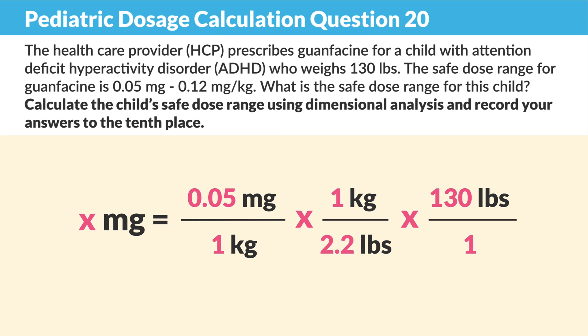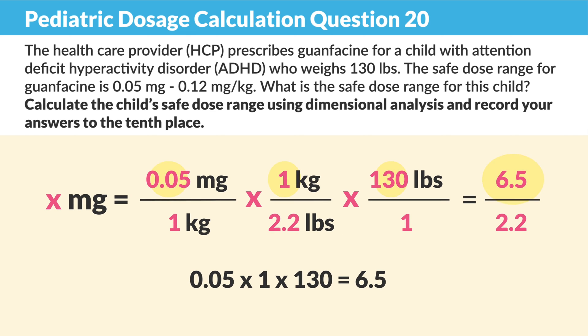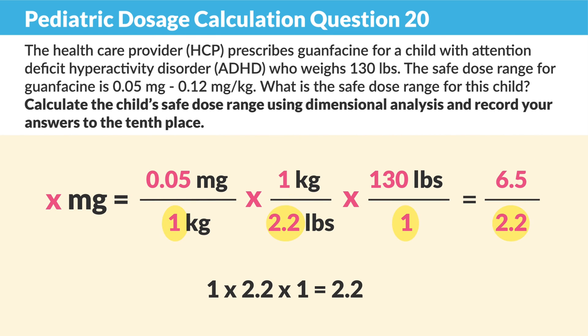That first number is 0.05 milligrams over one kilogram. Then we're converting pounds to kilos: one kilogram on top over 2.2 pounds. Simply plug in the child's weight — 130 pounds over one for one dose. Now multiply across on top and do the same thing on the bottom.